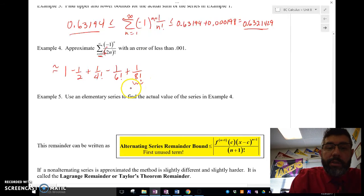And 1 over 8 factorial, 1 over 8 factorial is actually 0.000024. So that's plenty small. The problem was that 1 over 6 factorial was 0.00138. And that's still bigger than 0.001.